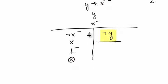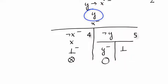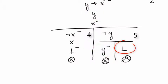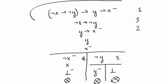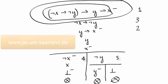Moving on to the other side, we apply the positive implication rule to not y, since this is y implies false. This means we branch again. On one side we add y minus and on the other we add false plus. Both of these have a clash — in one case we have y plus and y minus, and in the other we have false plus. So at this point we know the original signed formula is unsatisfiable, and so removing the minus we see the original formula is valid.